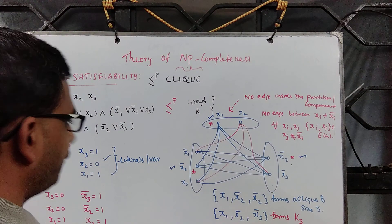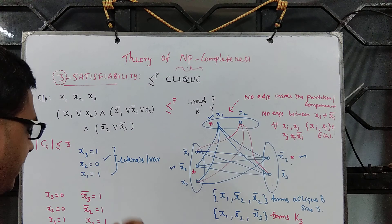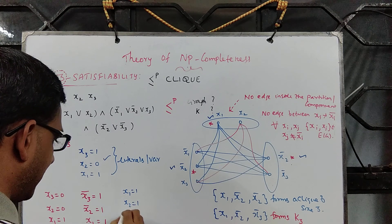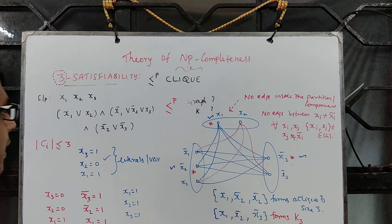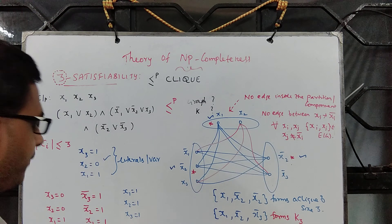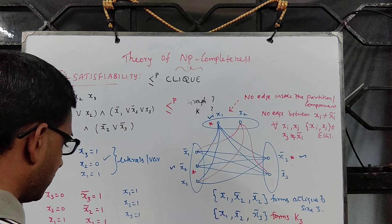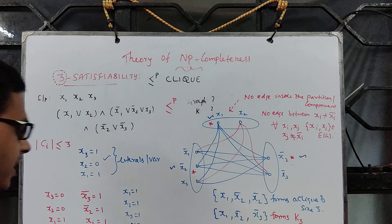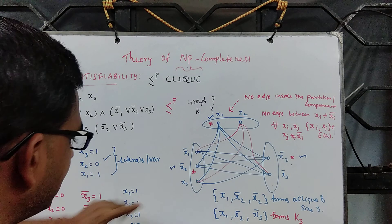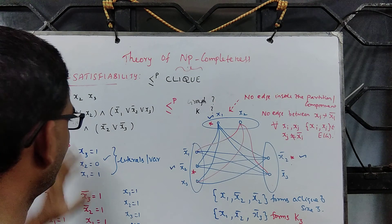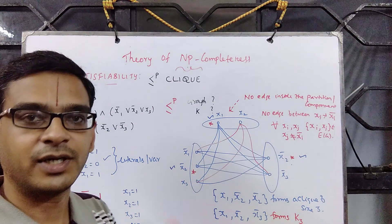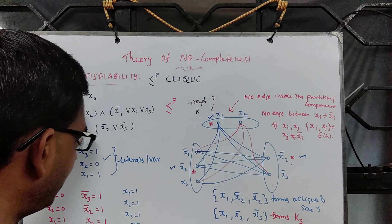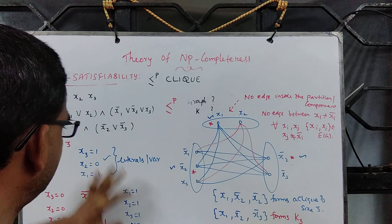Now if you look at some other truth assignment which does not evaluate to true — suppose you take x1 to 1, x2 to 1, and x3 to 1. Suppose we do this. Now what happens? This one is false, which means it is a no instance. No instance meaning for this truth assignment, this assignment is not correct. I am not saying there is no truth assignment at all — you may find some other truth assignment. What I am saying: look at this formula and look at some other truth assignment which is evaluated to false.